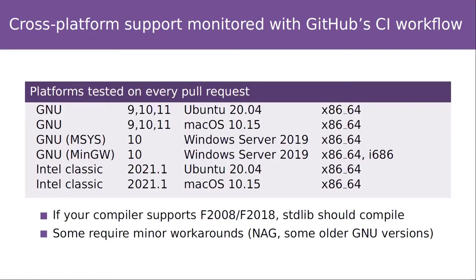The standard library project is also leveraging GitHub's continuous integration workflows to check cross-platform support. On every pull request, the CI builds the standard library and runs its test suite on seven different platforms — meaning seven different combinations of compiler, OS, and CPU architecture. As long as your compiler supports the 2008 or 2018 standard, stdlib should compile without issue. There are some known workarounds needed for NAG and some older compiler versions, but for the most part anything reasonably recent will just work. I've built the standard library with several versions of ifort on a recent MacBook, as well as several versions of gfortran on a junky 10-year-old netbook running 32-bit Linux.